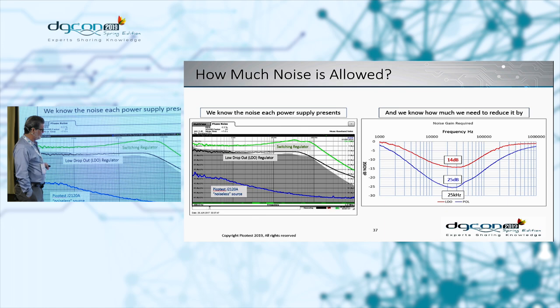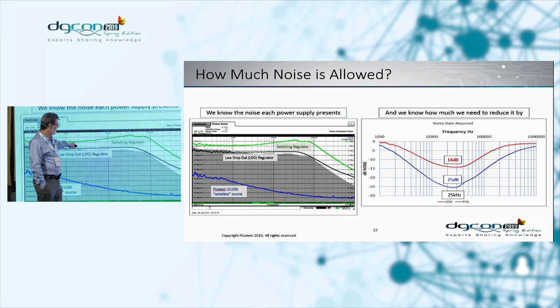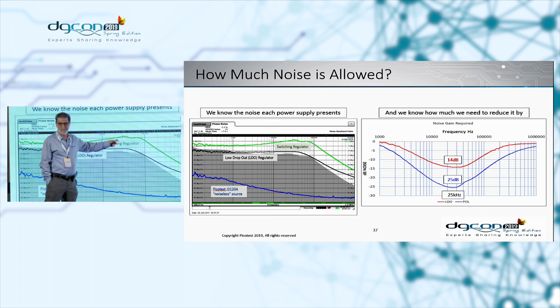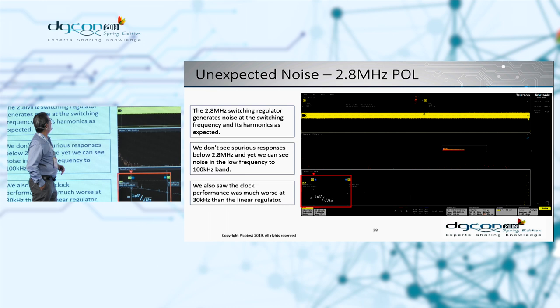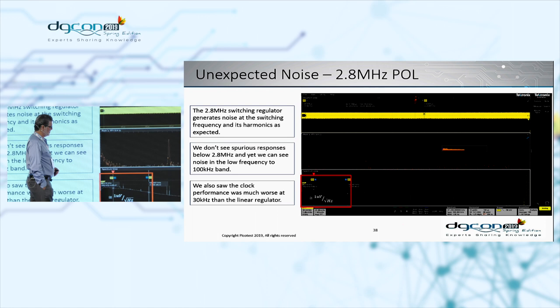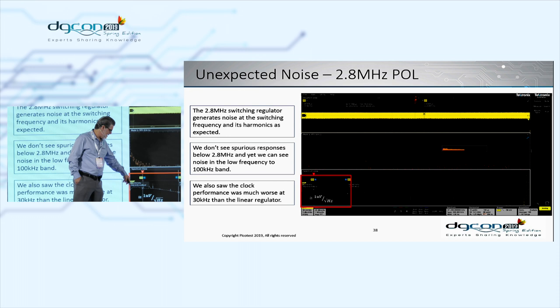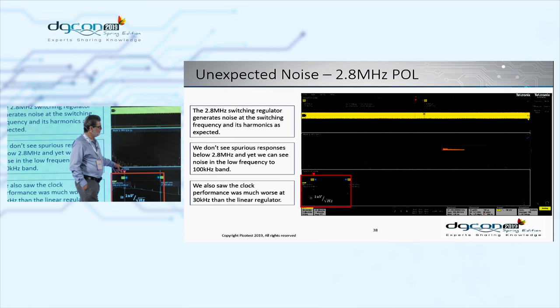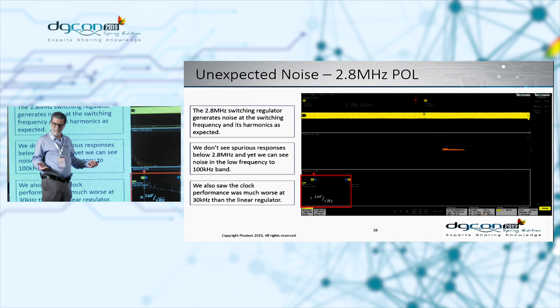Looking at the noise density of these three power supplies — clean plots — you can see the modulator has about one to two nanovolts per root hertz of noise. Here's the linear regulator and here's the switching regulator, and sure enough there's a lot of noise in the switching regulator at low frequency. We know exactly what we need to do to fix it based on the resistor we were willing to add. So where's this noise coming from? It turns out that if I use the preamplifier, the spectrum analyzer in the Series 6 oscilloscope is good enough to actually see it — roughly one microvolt per root hertz at low frequency. Here's the 2.8 MHz fundamental, 5.6 MHz, 8.4 MHz — all those harmonics. Where does that noise come from? It doesn't make a lot of sense.